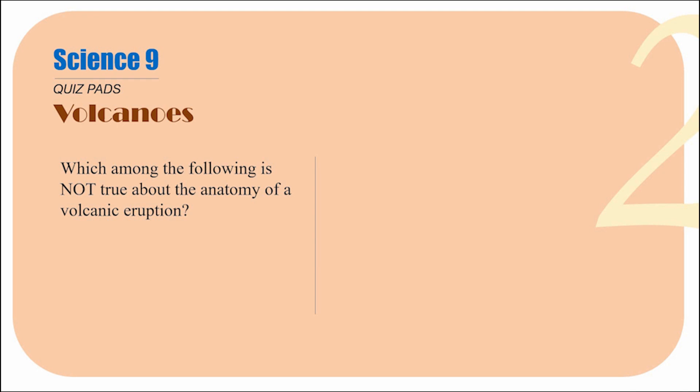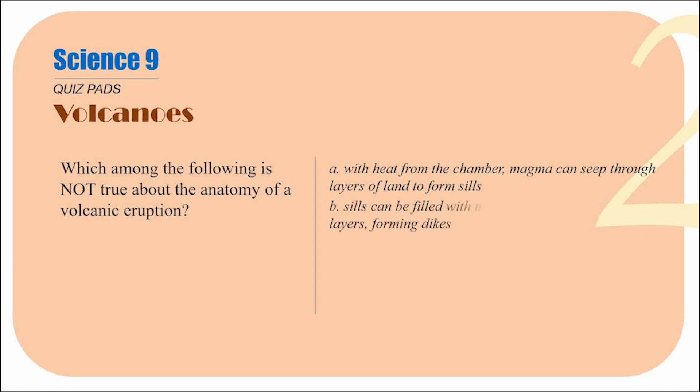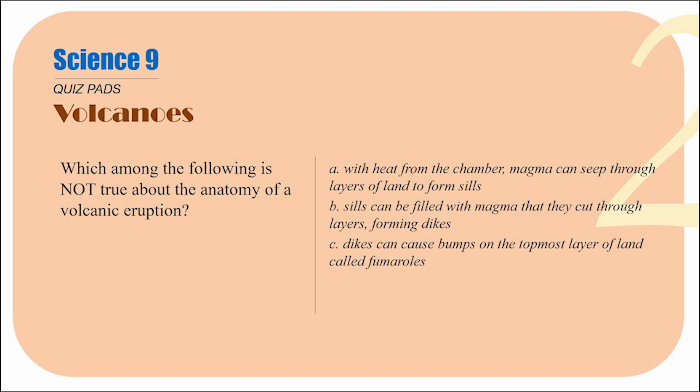It has a magma chamber. Recall that and look at which among the following would NOT actually happen in a volcanic eruption: A — with heat from the chamber, magma can seep through layers of land to form sills; B — sills can be filled with magma that they cut through layers forming dikes; C — dikes can cause bumps on the topmost layer of land called fumaroles; D — fumaroles can eject hot gas from the layer of land beneath it.